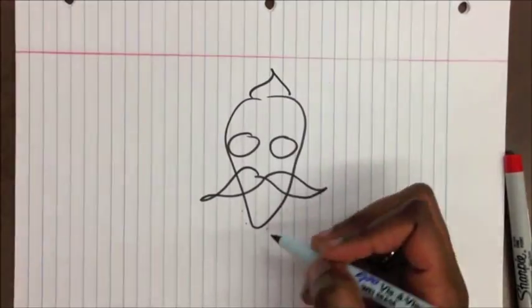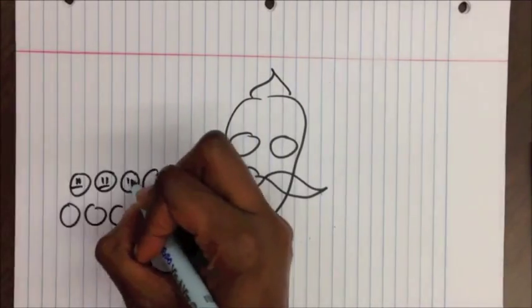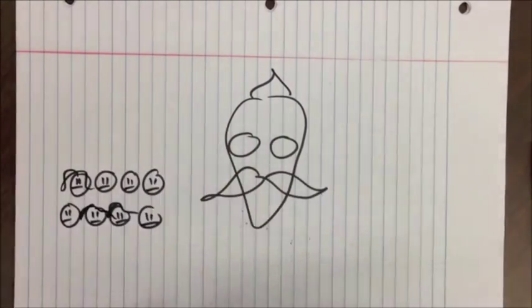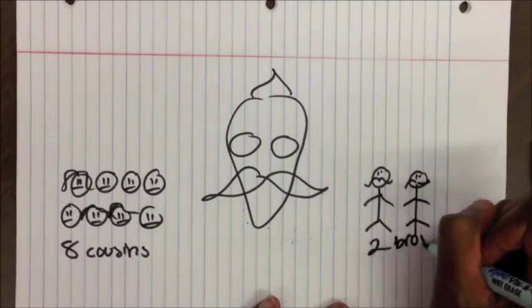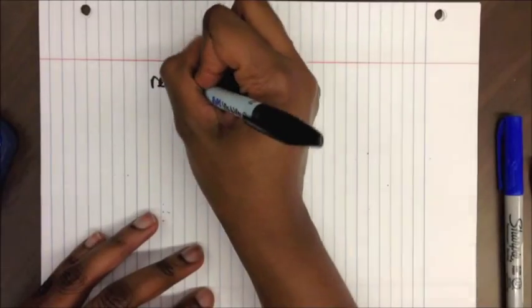J.B.S. Haldane once said, when asked whether he would lay down his life for his brother, he supposedly replied: two brothers or eight cousins. See if you can figure that out. How can we make sense of this?